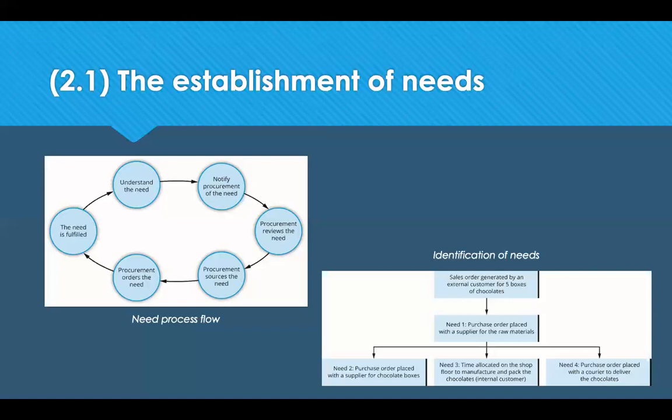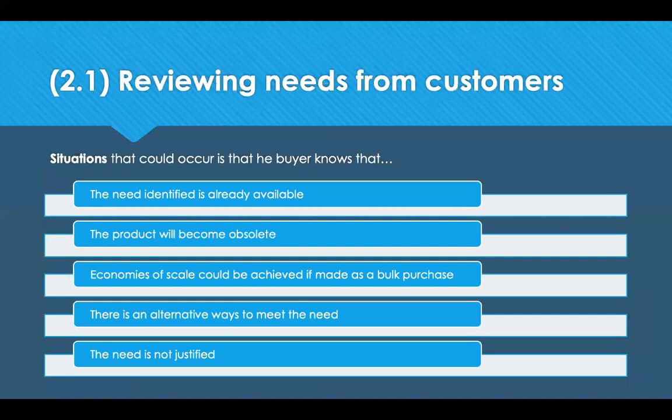The needs process flow on the slide helps us to understand the need, notify us of the need, review it, source it, order it, and so on. Those needs can then span into more than just one order — it could be multiple things needed to satisfy the end result. When reviewing needs from customers, it's important for procurement to always think carefully about the need put in front of them. It doesn't mean the buyer doesn't trust the customer, but sometimes we've got the knowledge that may result in us amending or even cancelling the order.